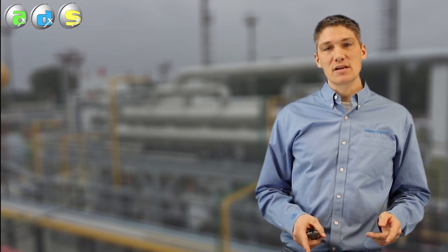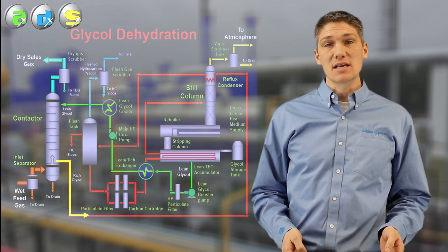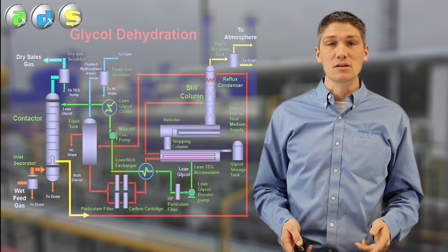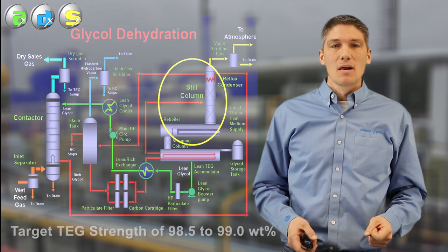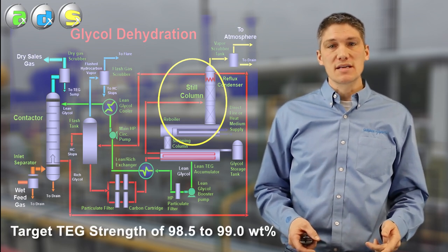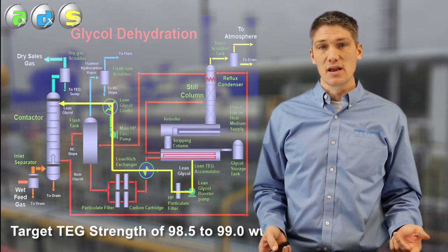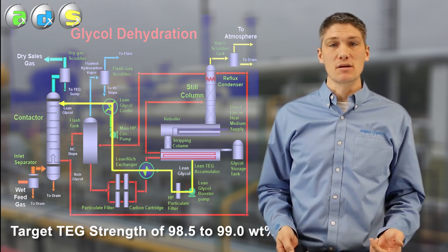So, the lower the water content of the lean TEG injected into the top of the contactor, the lower the water content of the gas leaving the top of the contactor. The water vapor removed from the gas is present in the rich TEG leaving the bottom of the contactor. The water is removed from the rich TEG by boiling it out of solution in the regenerator and reboiler. Once the water is boiled off at a temperature around 200 degrees Celsius, the resultant lean TEG is then cooled and filtered and sent back to the contactor to complete its cyclic process.